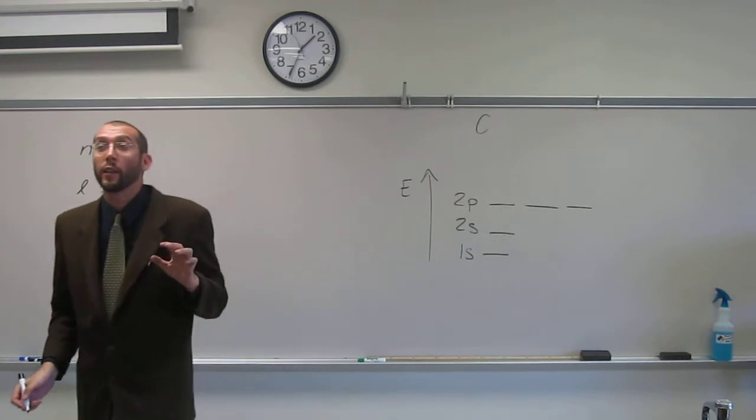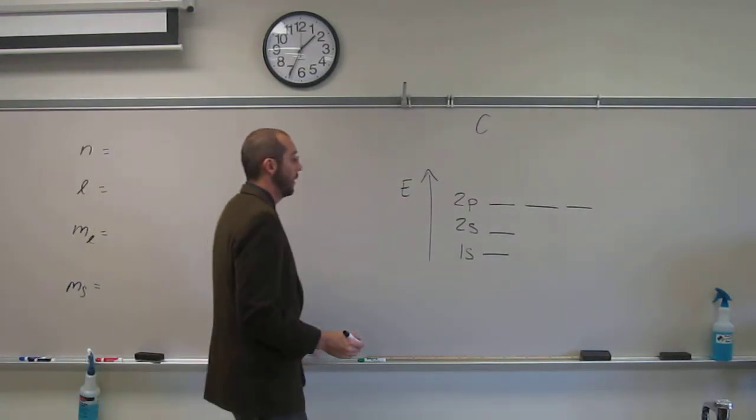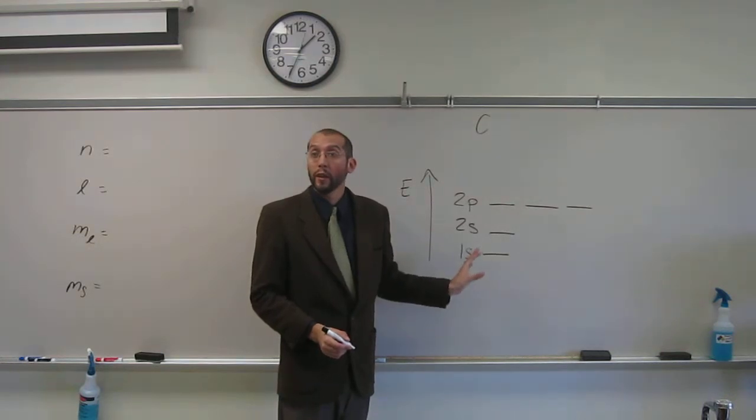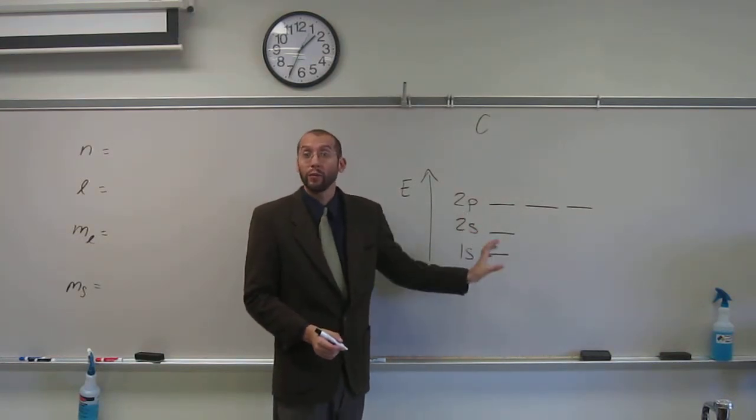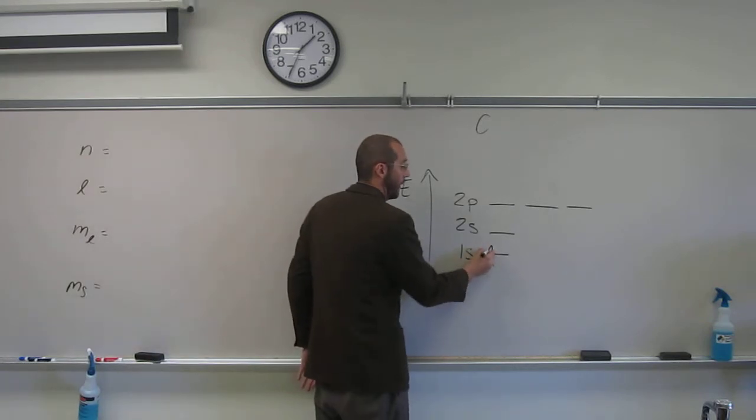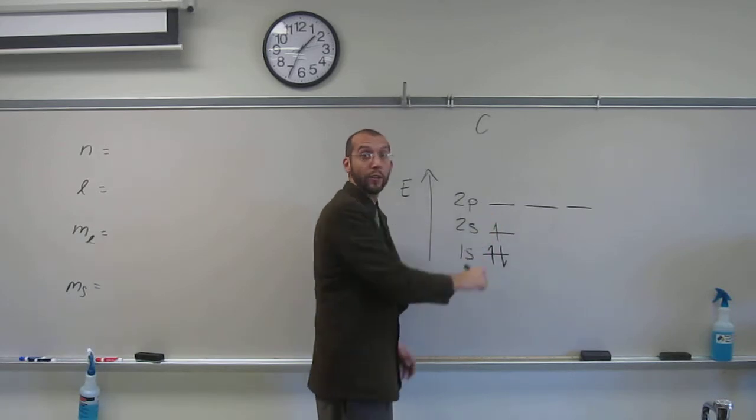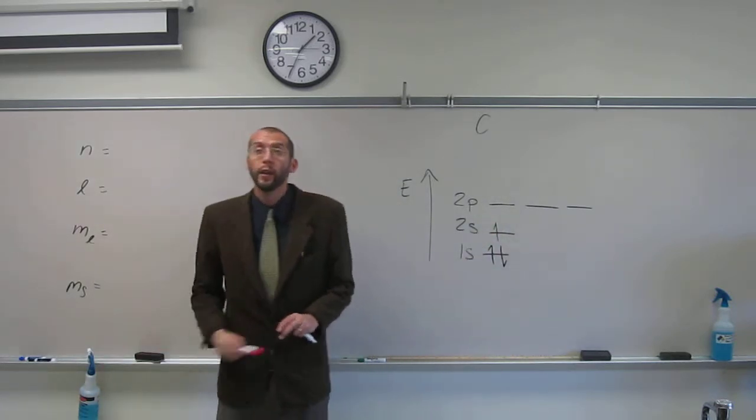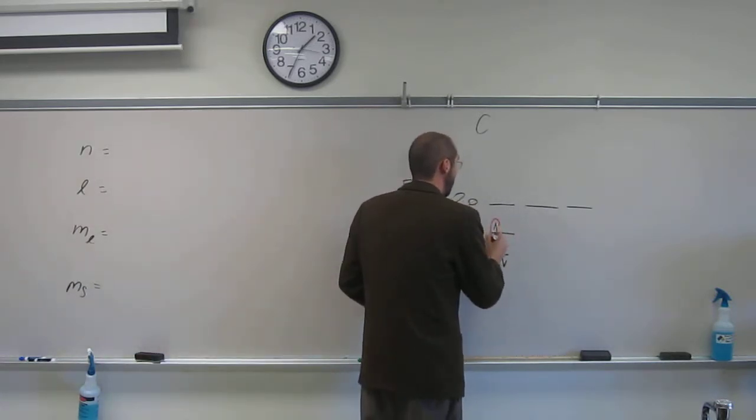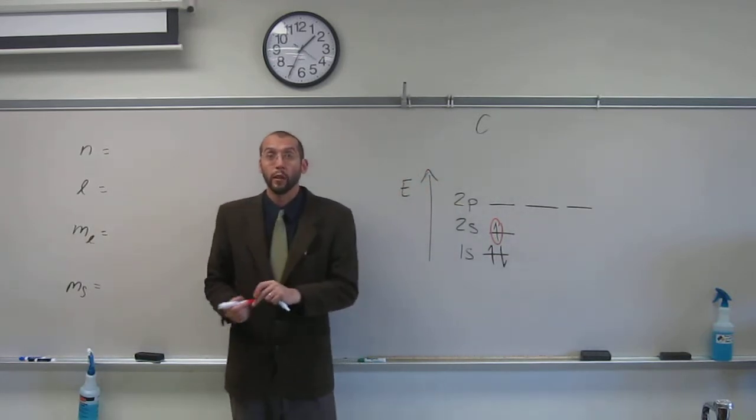So what did we say, the third electron and the sixth electron, right? So what I mean by that is the way that you fill by the Aufbau principle. So the first electron would be there, second electron, third electron is that electron there. So let's just circle it so we know that we're going to be describing that one in particular.